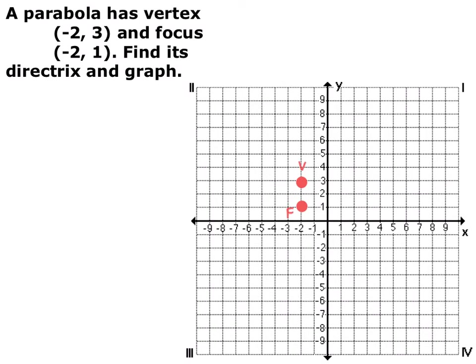The first thing I always do when doing these problems is graph what we know — so I graph my vertex and my focus. The focus is always inside the parabola, so I know this is going to be a downward facing parabola since the focus is below the vertex. The directrix is always on the opposite side, so the directrix is going to be somewhere above the vertex. We also know that the distance between the vertex and the focus, which in this case is 2, is the same as the distance between the vertex and the directrix.